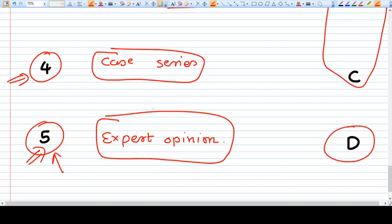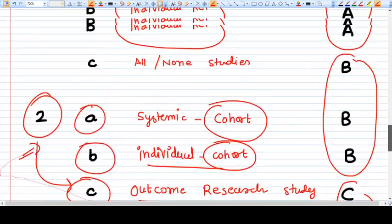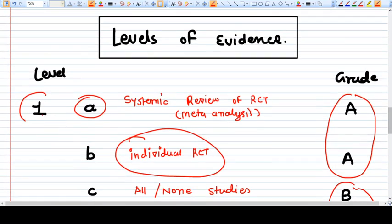So expert opinion is considered as weak evidence, while the well-maintained RCT or meta-analysis of well-maintained RCTs are considered as the highest level of evidence, having grade A and level 1a and 1b. Thank you friends.